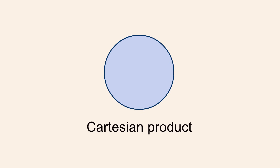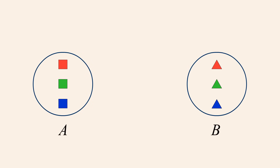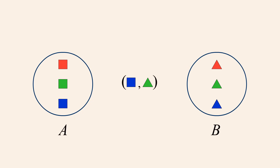The Cartesian product of two sets creates elements called ordered pairs. Forming the Cartesian product of two sets A and B involves selecting an element from A and pairing it with an element from B. The elements are enclosed in parentheses separated by a comma.